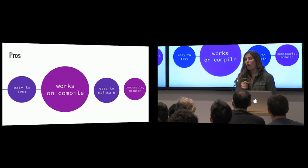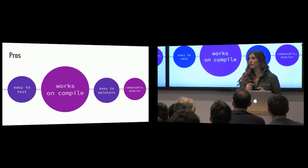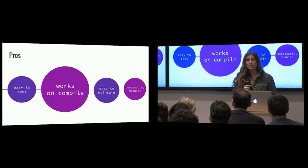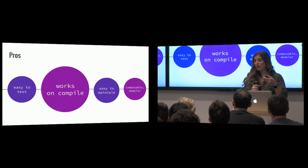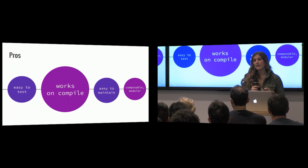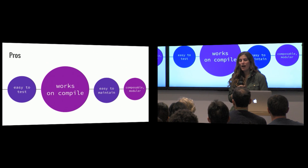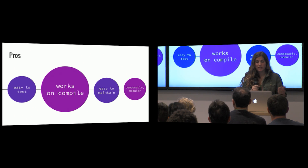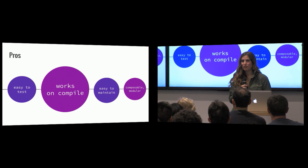The pros we found: almost without fail, when we get the types to check out, it works on compile. We used to have an iterative process where something wouldn't quite work and we'd recompile a couple times — with Gradle and our build times, that wasn't feasible. Now when the types check out, because it's reactive and declarative, it just works. It's easy to test — we just issue an action, see how the state changes, confirm it's what we wanted, and we're done. It's also easy to maintain and it's composable and modular.